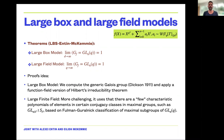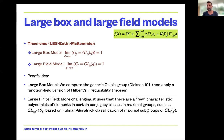The large finite field model is more challenging. The main ingredient we use is that there are few characteristic polynomials of elements in certain conjugacy classes in maximal subgroups of GLn — for example the wreath product, which acts on a factorization of the vector space into a direct sum of l copies. This is based on the Fulman–Guralnick classification of maximal subgroups of GLn(q), a series of papers that is a key ingredient in the proof.